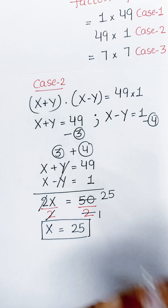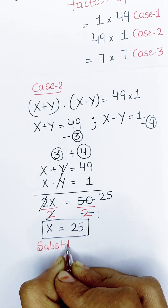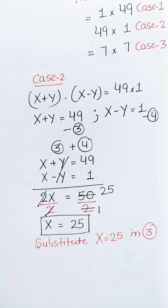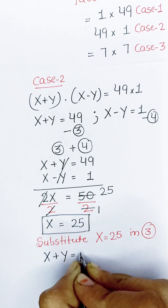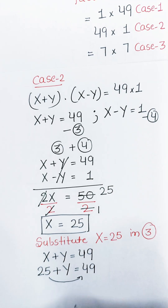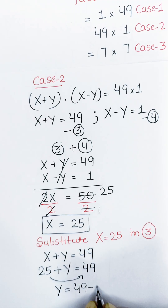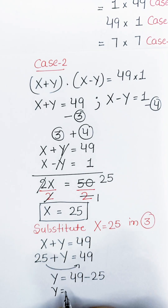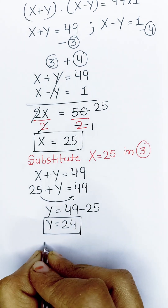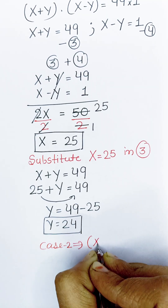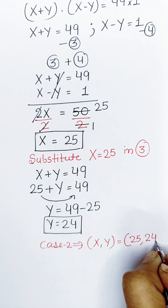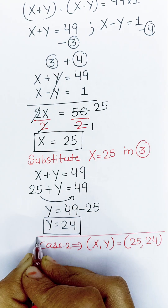Now substitute x equals 25 into equation 3, which is x plus y equals 49. Putting in the value: 25 plus y equals 49. Taking 25 from the left to the right: y equals 49 minus 25, which gives y equals 24. So from Case 2, we get x equals 25 and y equals 24.